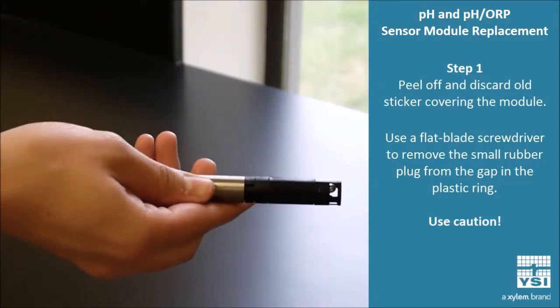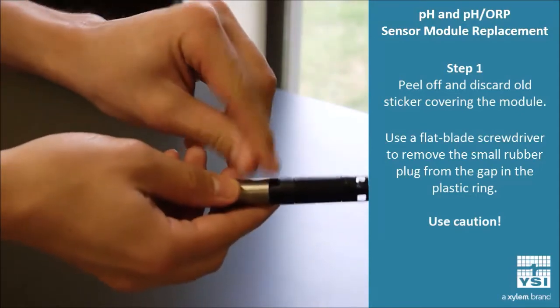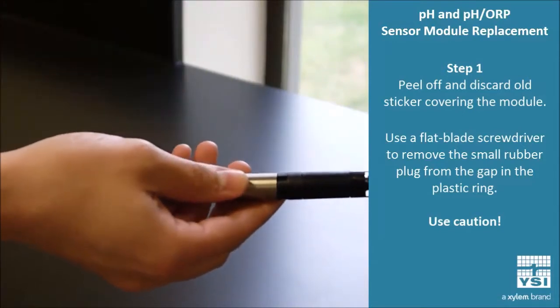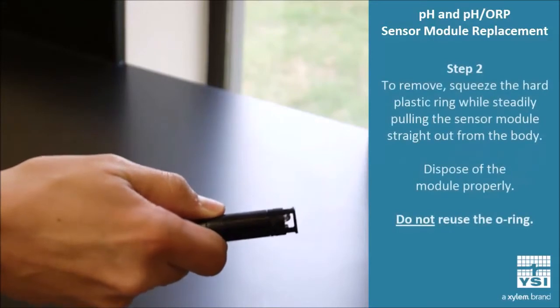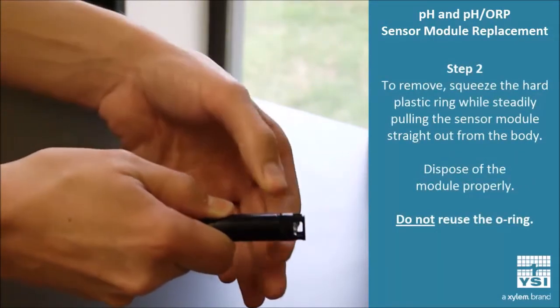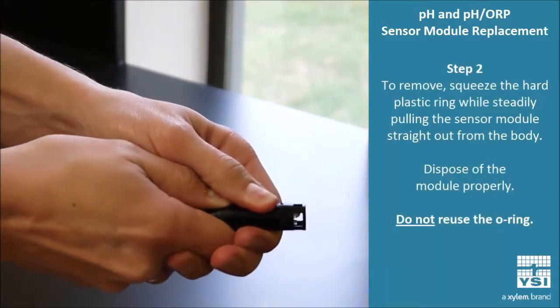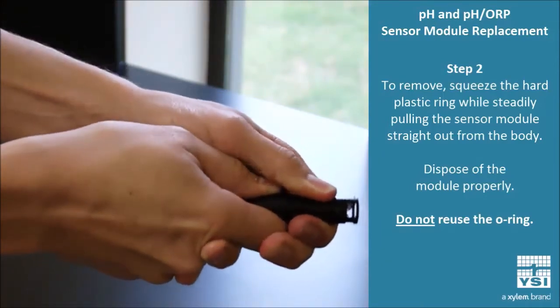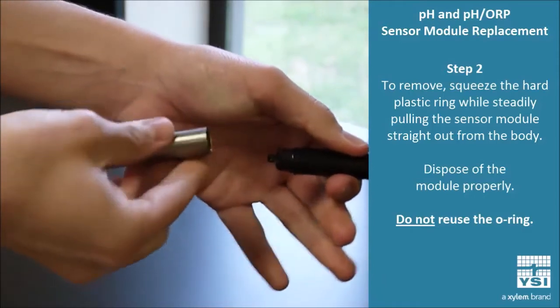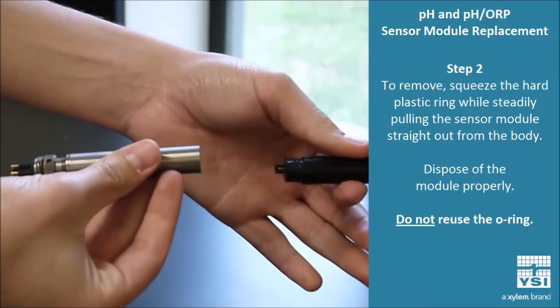Now you should notice that there is an empty space where you just pulled the plug out. So step two is to squeeze very tightly around this area, and then with your other hand, pull the module out. This might be a little bit difficult, but eventually, the sensor should come in two pieces.